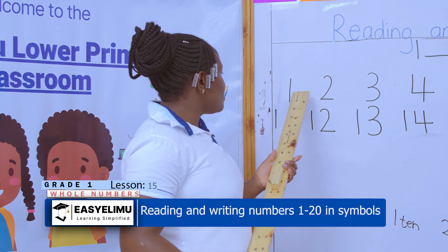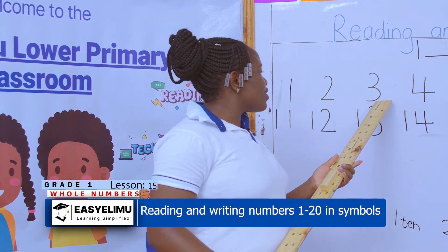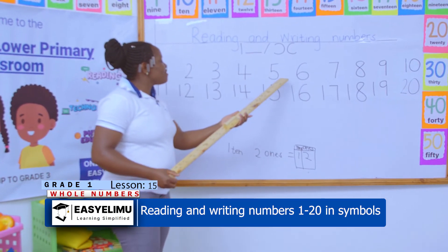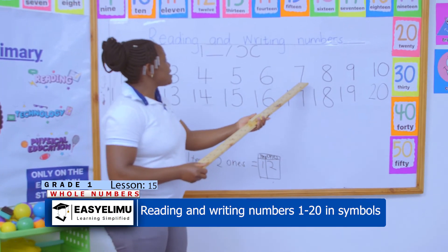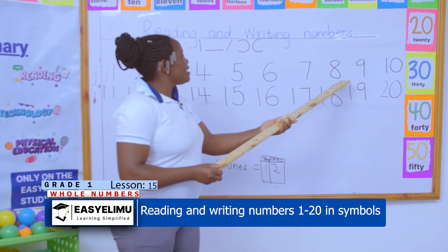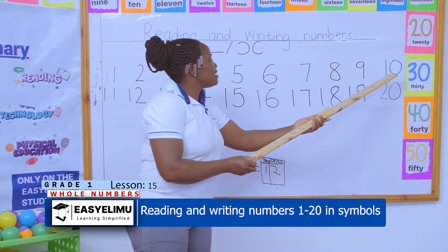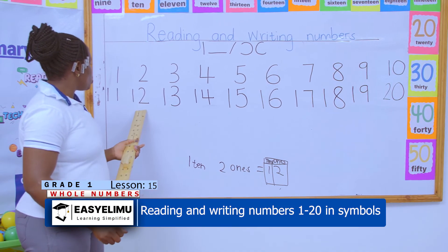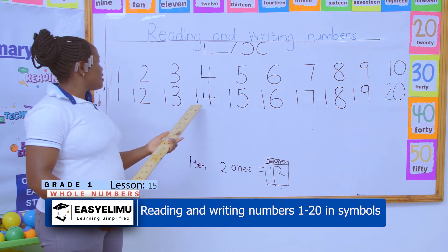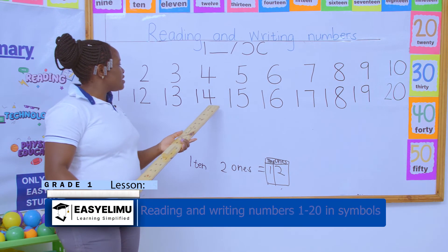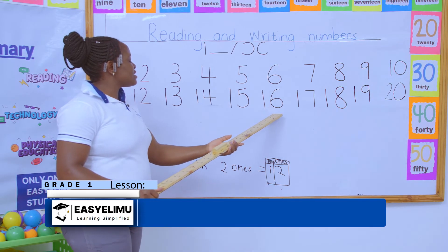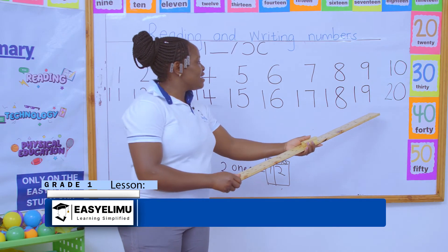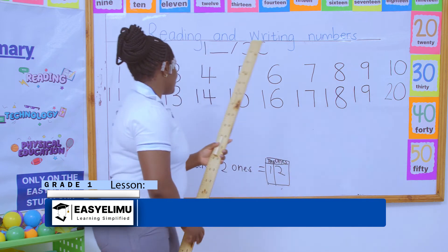We have: 1, 2, 3, 4, 5, 6, 7, 8, 9, 10, 11, 12, 13, 14, 15, 16, 17, 18, 19, 20.